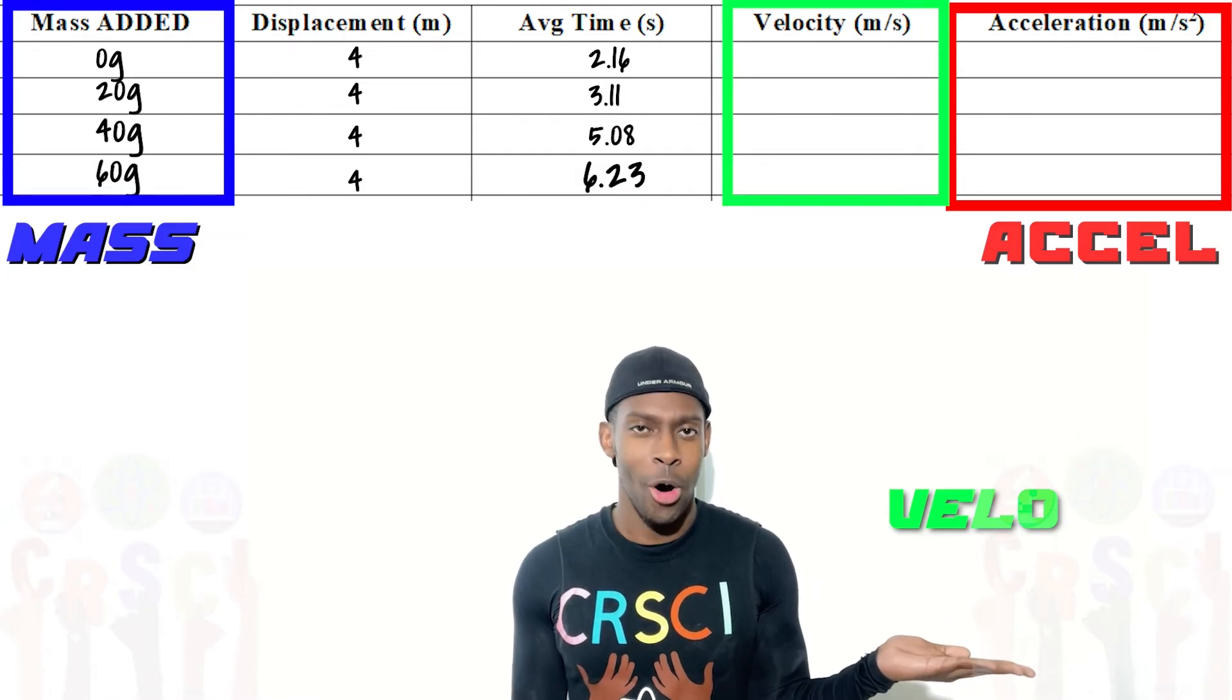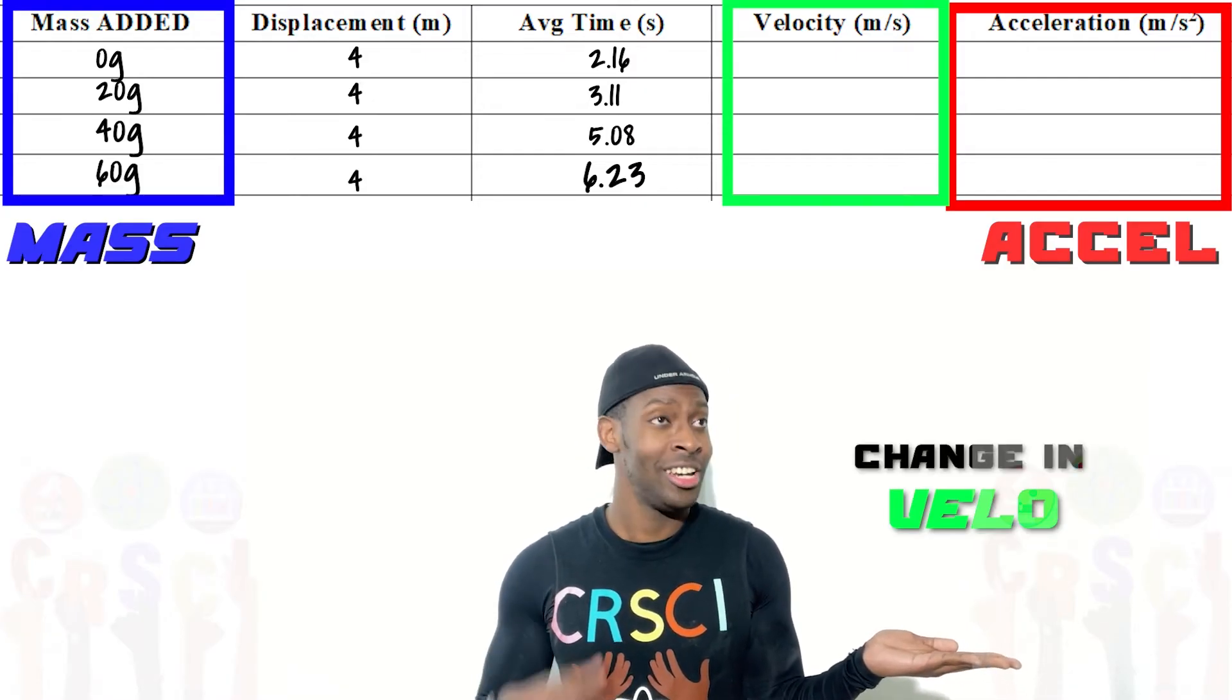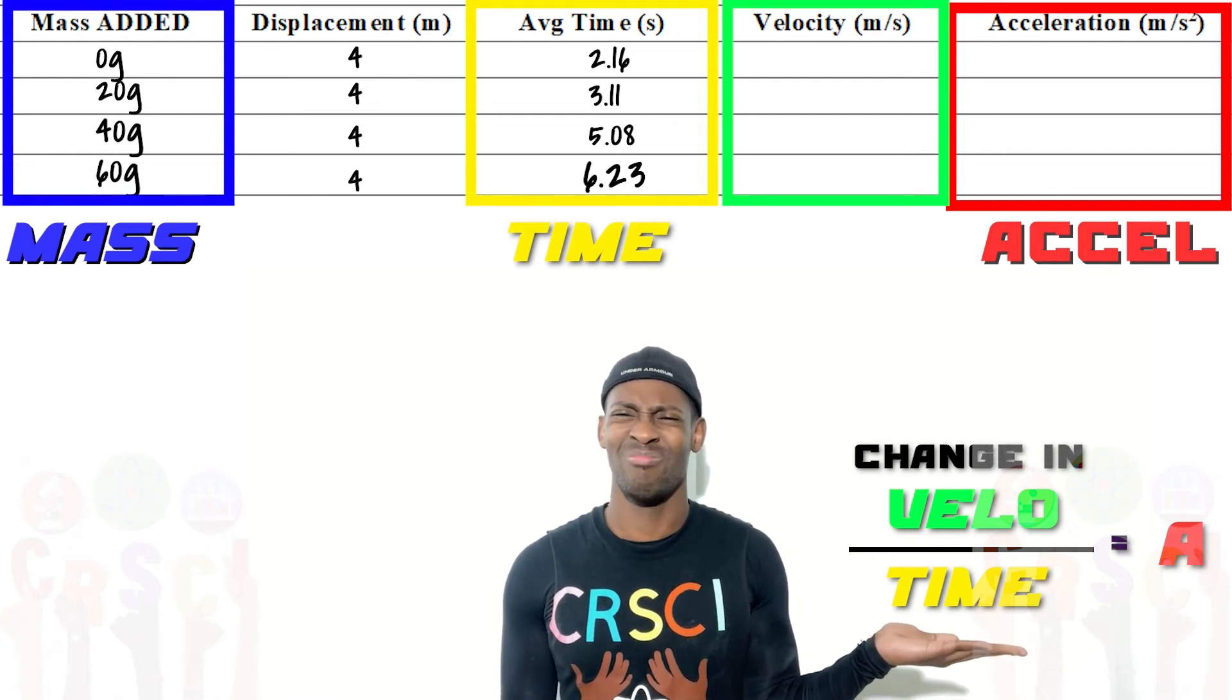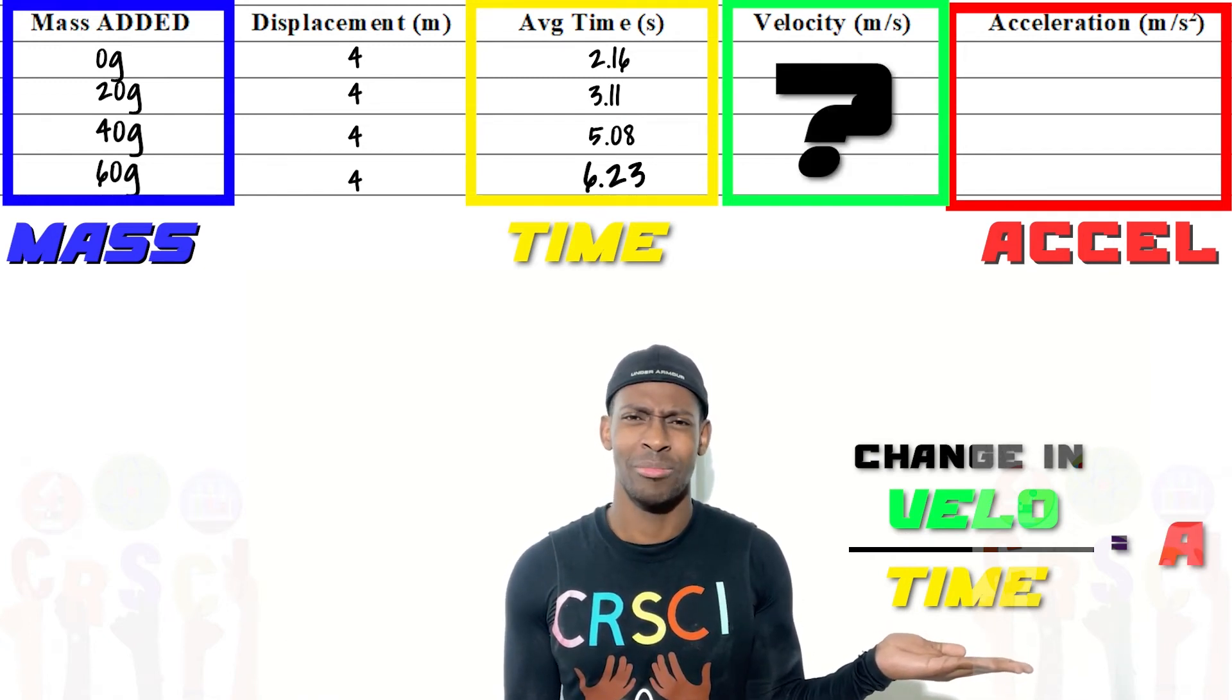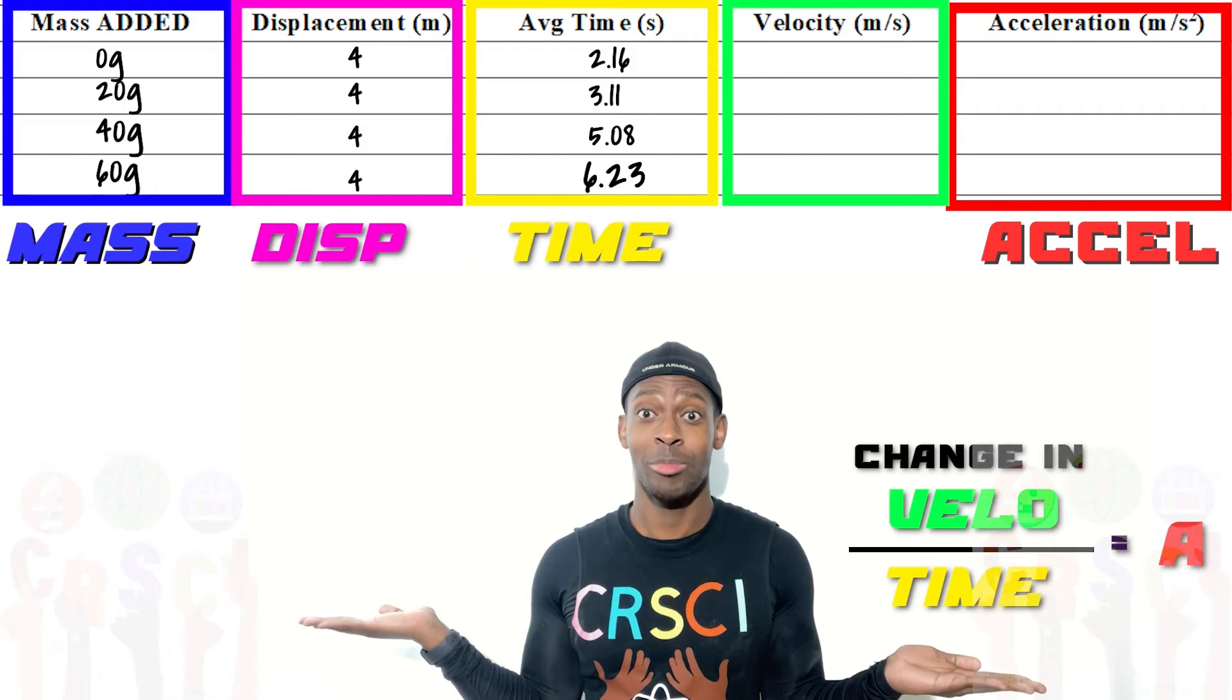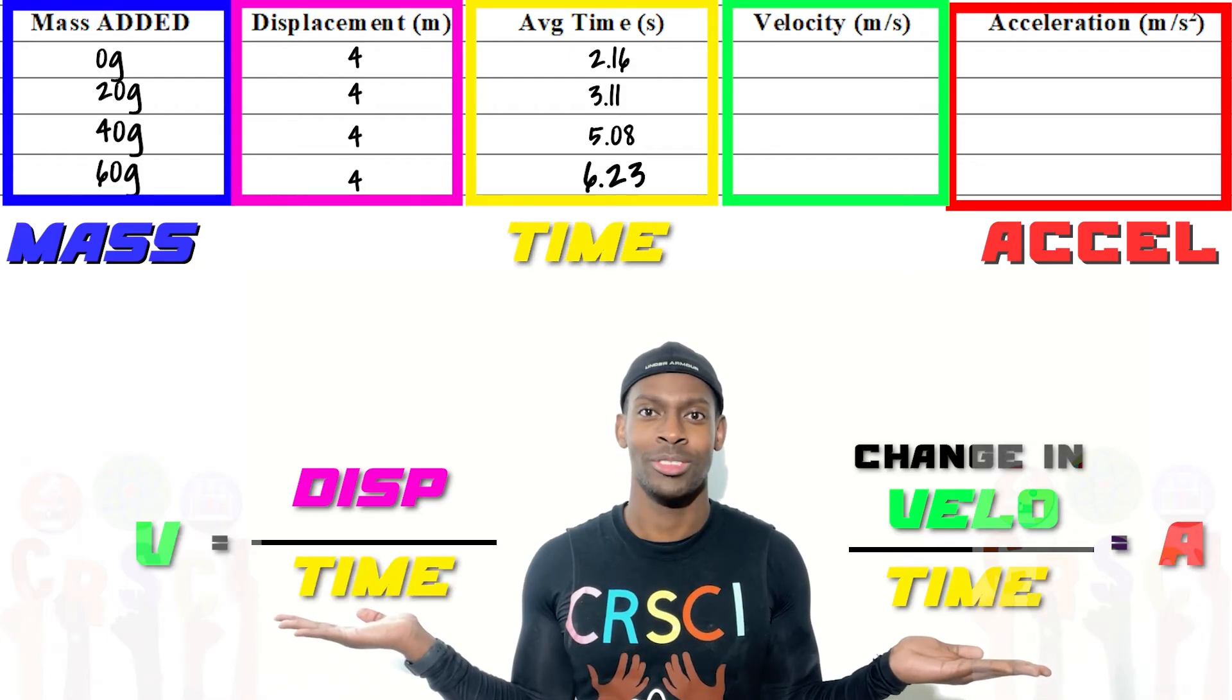So we're going to have to calculate acceleration the old-fashioned way, using change in velocity divided by time. But how do we get velocity? Well, we have displacement, and we can divide that by the time as well to get velocity.